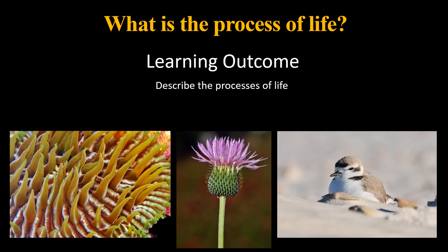To start thinking about life and coming up with a broad view of it, let's dump the characteristics of life — forget about the five or seven characteristics of life. Let's think about the process of life. By thinking about the process of life, we can ask: what does life do? And can we apply those processes to every single living organism on this planet and to other life we haven't found yet outside of it?